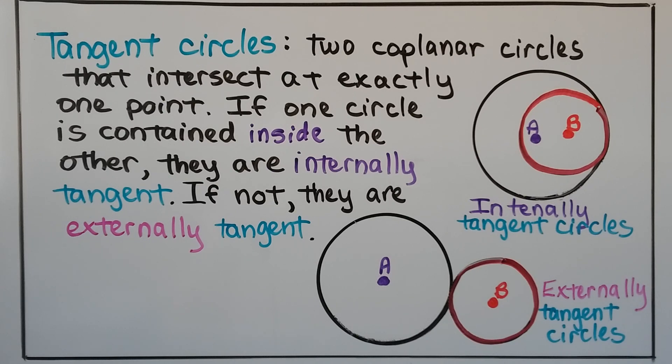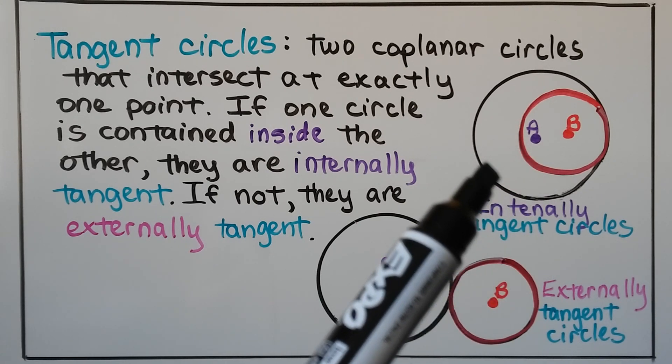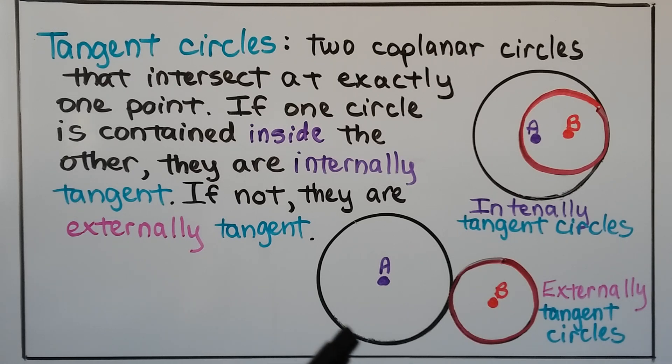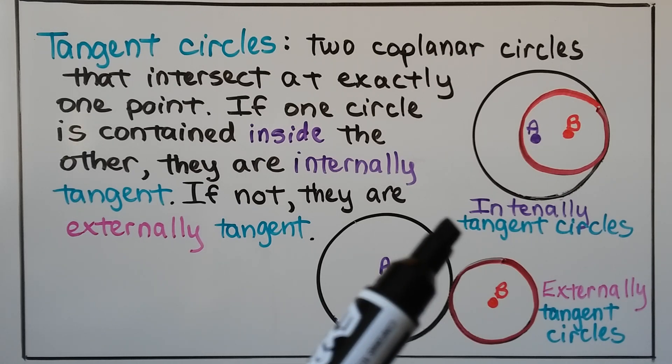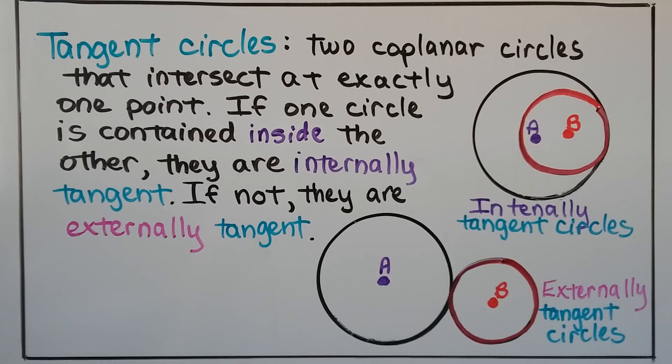Tangent circles are two coplanar circles that intersect at exactly one point. If one circle is contained inside the other, they're internally tangent. If not, they're externally tangent. So here we have internally tangent circles. Circle B is inside circle A. And here we have externally tangent circles. B is outside of circle A.